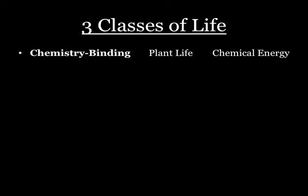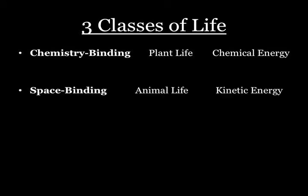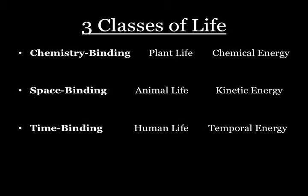Energy was very much at the heart of Korzybski's thinking, as he was an engineer concerned with work, which requires power, which requires energy. Korzybski began his development of a non-Aristotelian system by introducing his taxonomy of classes of life: chemistry-binding, plant life being based on chemical energy; space-binding, animal life being based on kinetic energy; and time-binding, human life being based on a special kind of potential energy — what we might call temporal energy — that is, the ability to store and preserve knowledge, to build on past discoveries and make progress.